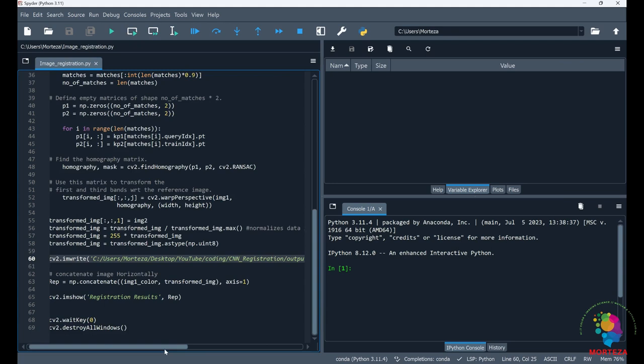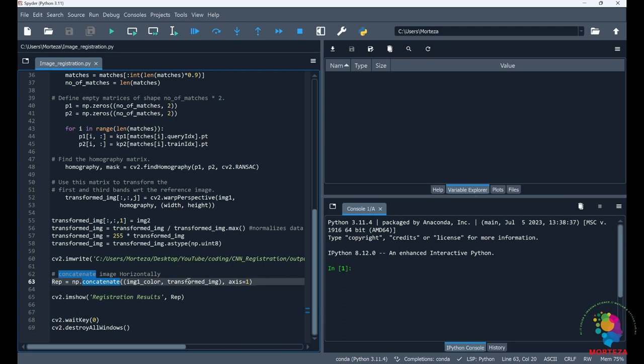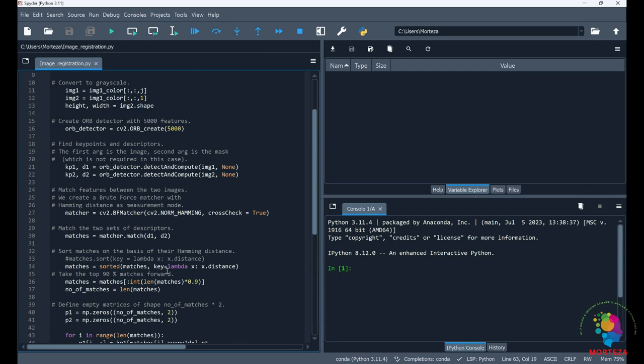And this is where I'm saving the image in the same folder, very easy. I'm specifying the folder and then the variable, which is the transformed image. And then here is where I'm concatenating the registered image with the not registered image so that I could show them at the same time using imshow in OpenCV.